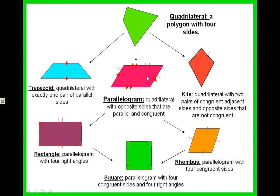A rectangle, a rhombus, and a square can all be considered parallelograms as well. Everything down here can be considered a parallelogram because a rectangle, a square, and a rhombus all have opposite sides that are parallel and congruent.